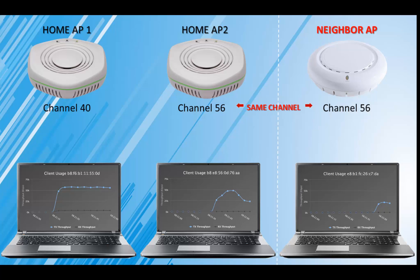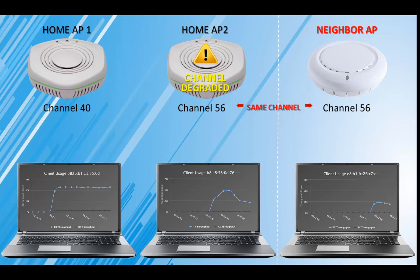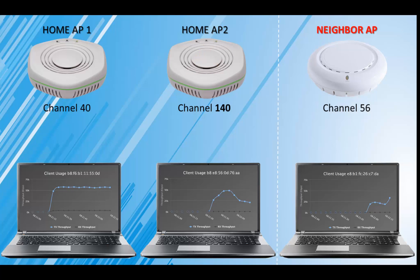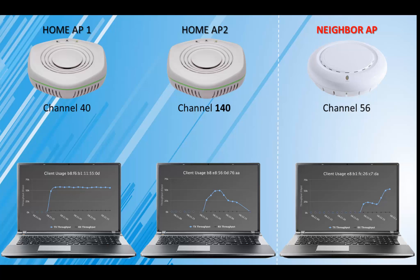After a few seconds, the radio resource manager governing your network detects the interference and issues a channel change. The channel change briefly stops all traffic, but clients remain connected. Then, performance is quickly restored to its former level and the performance of the neighbor's AP improves as well.